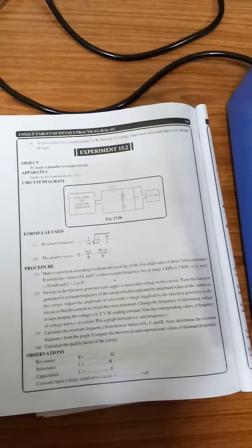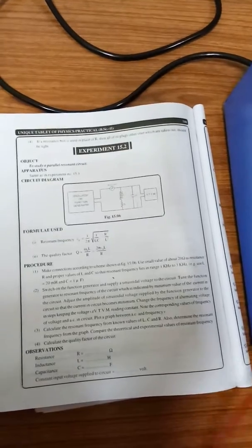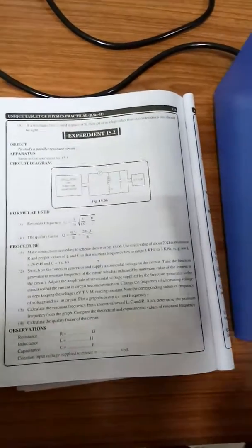We'll start with our next experiment, which is a parallel resonant circuit. This is how your experiment looks in the book. We'll start with the connections now.